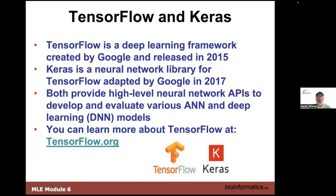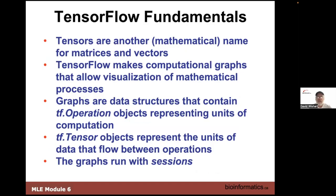Then there's Keras and TensorFlow. TensorFlow is a deep learning framework that Google created about seven or eight years ago, and Keras is a neural network library specifically for TensorFlow. So scikit-learn is for decision trees, random forests, and SVMs, but TensorFlow and Keras are really for the neural net stuff. They have APIs to develop and evaluate standard artificial neural nets and deep neural nets — including convolutional neural nets, recurrent neural nets, and graphical neural nets.